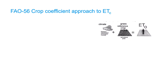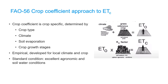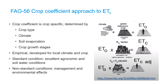Based on these defined characteristics, the equation for reference evapotranspiration can be derived from the Penman-Monteith equation. To estimate actual evapotranspiration from the FAO56 reference evapotranspiration, crop coefficients are developed. Crop coefficients are empirical coefficients applied to reference evapotranspiration that can be determined by crop type, climate, soil evaporation, and crop growth stages. They are first developed for standard conditions such as excellent agronomic and soil water conditions, then adjusted for non-standard conditions where management and environmental effects influence crop evapotranspiration.